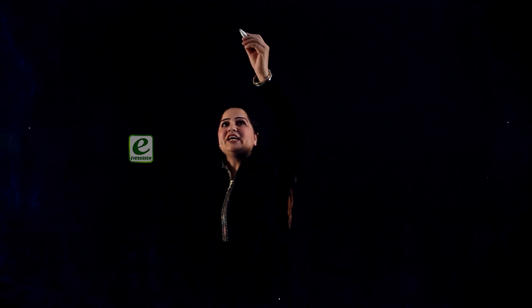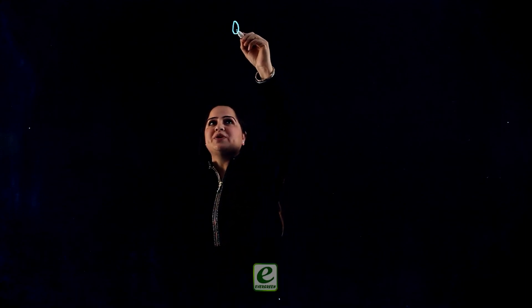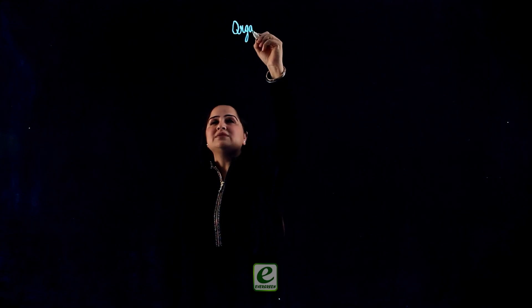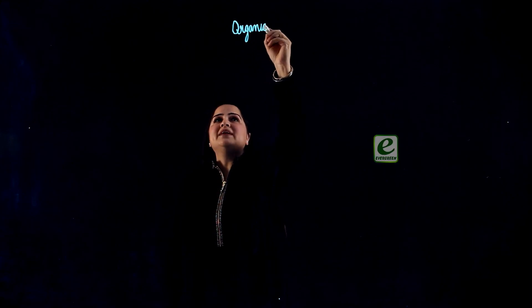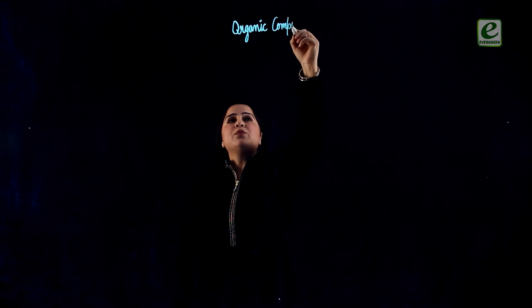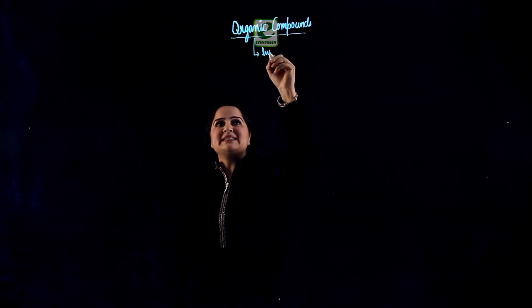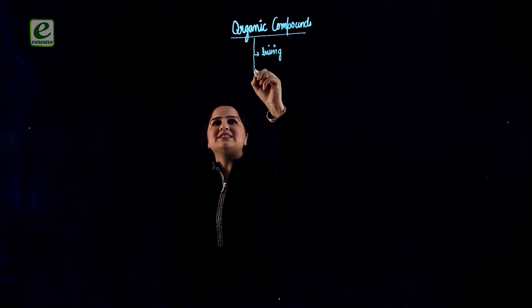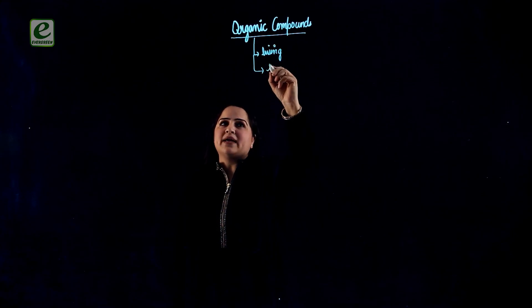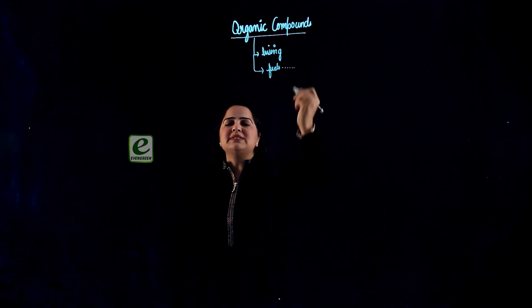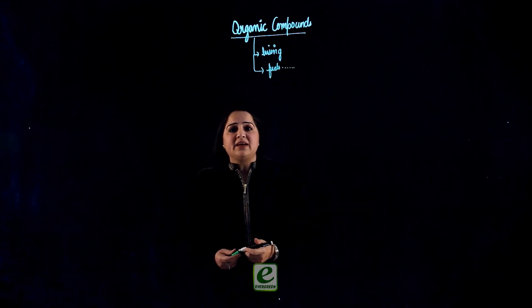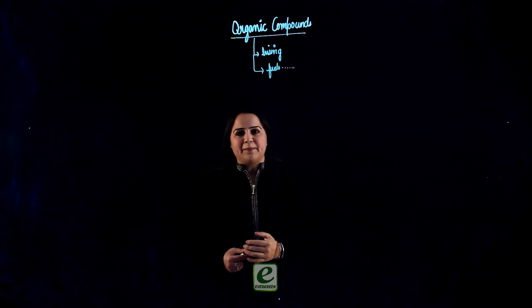Hello everybody. In this series of videos we'll be talking about organic chemistry. Organic chemistry is the branch of chemistry which deals with organic compounds, that is hydrocarbons and their derivatives. Organic compounds are those compounds which are present in living substances, or they were present in living substances — like all fuels, the rotten material which were once living — they have organic compounds in them.